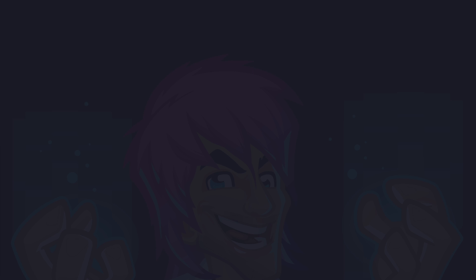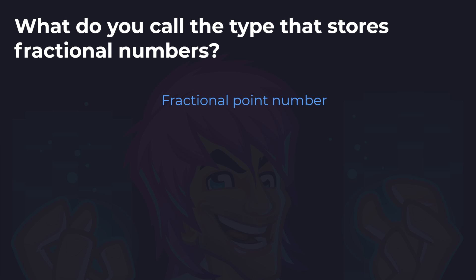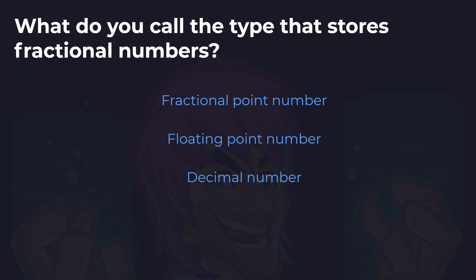What do you call the type that stores fractional numbers? Is it a fractional point number, floating point number, or decimal number? And the answer is floating point numbers. In C# we call these floating point numbers because the point can float depending on the accuracy of the number we're trying to define. Decimal is a type of floating point number, along with float and double. Fractional point numbers doesn't really make sense because it's a fractional number, not a fractional point.